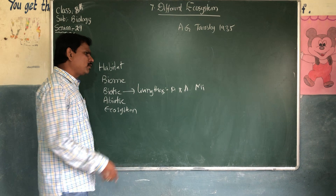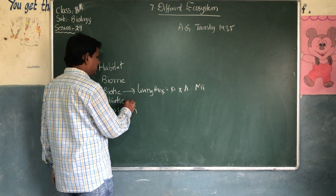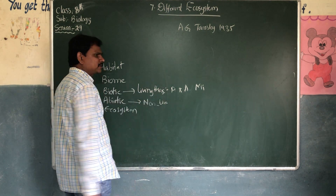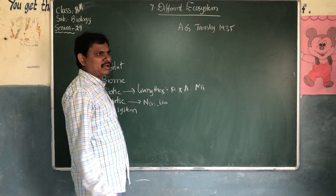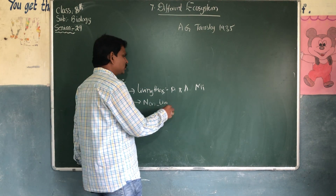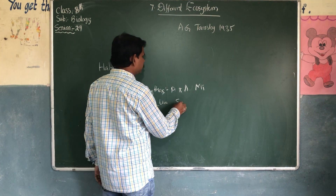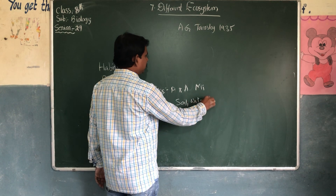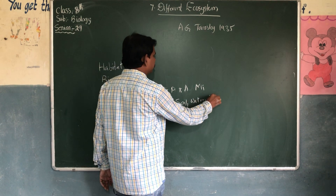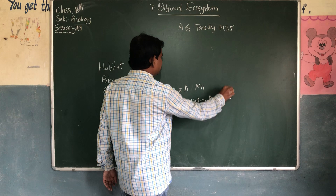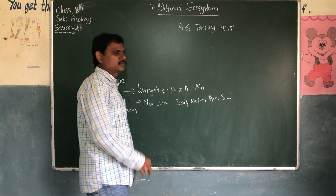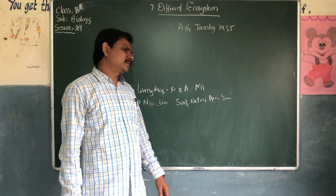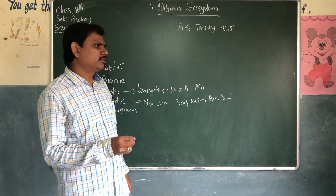Abiotic talks about non-living things. What are non-living things? Soil, water, air, sunlight — so many things are there. Non-living things are related to physical factors of the environment.